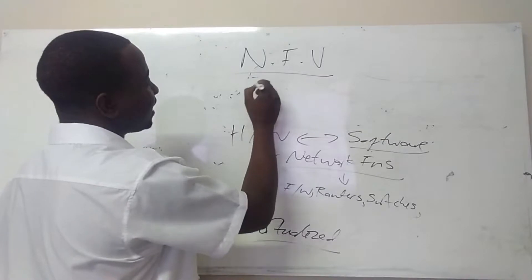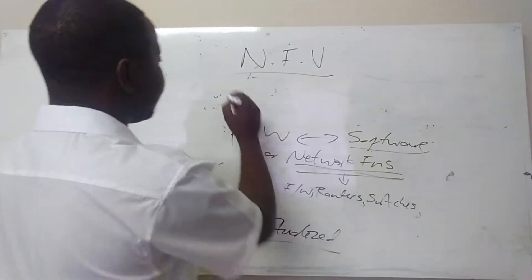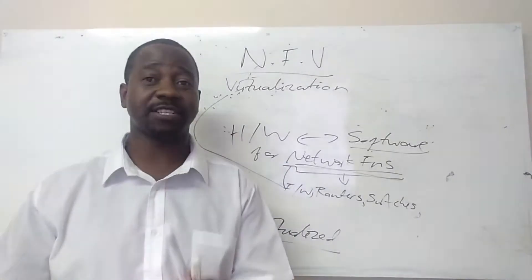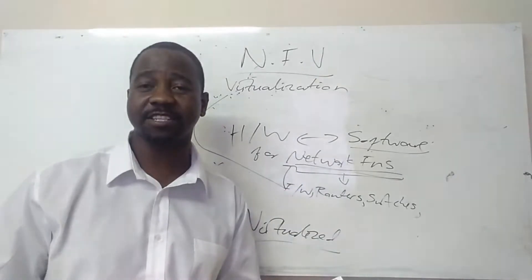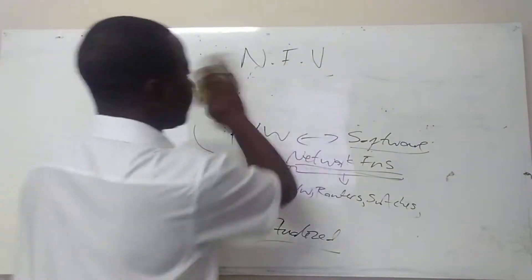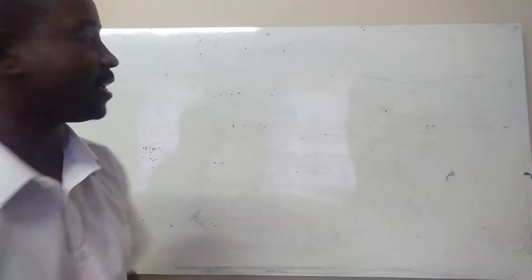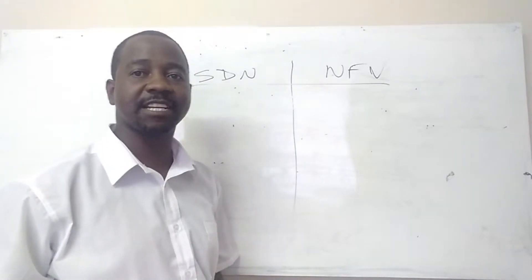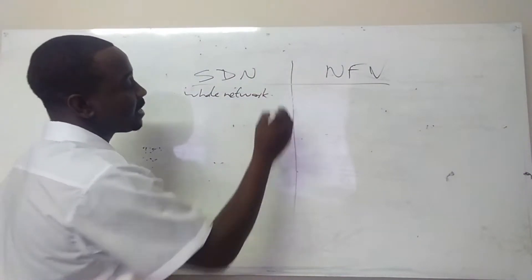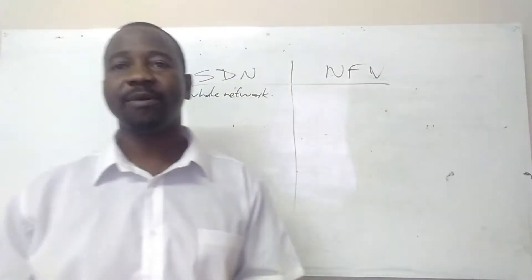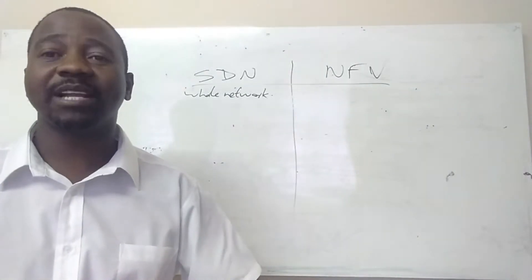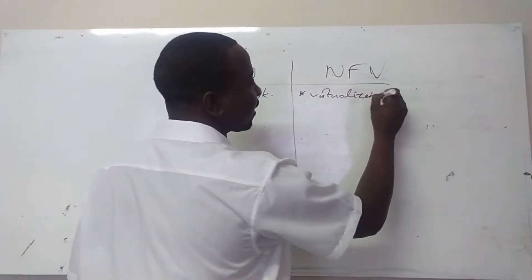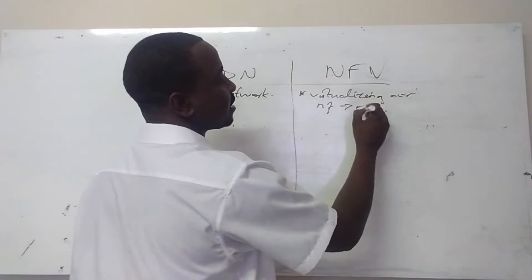With network function virtualization, we are focusing on the virtualization of the network functions — that is what NFV is. So what's the difference between network function virtualization and software defined networking? With software defined networking, we are looking at controlling the whole network — we are changing the way in which we control our networks and making sure we have one central device controlling all the other devices. With network function virtualization, all we are doing is virtualizing our network functions such as routers and switches, while maintaining the old way of configuring our network — we are not moving to the software defined way of doing it.